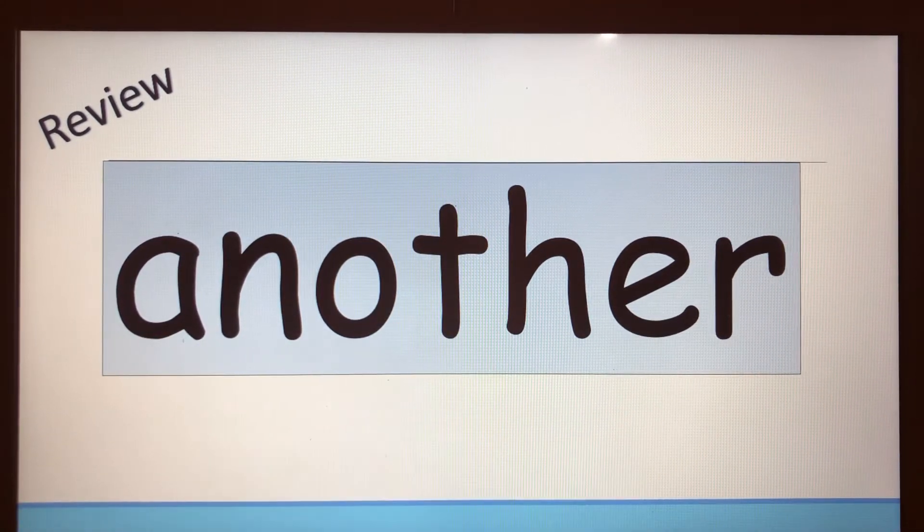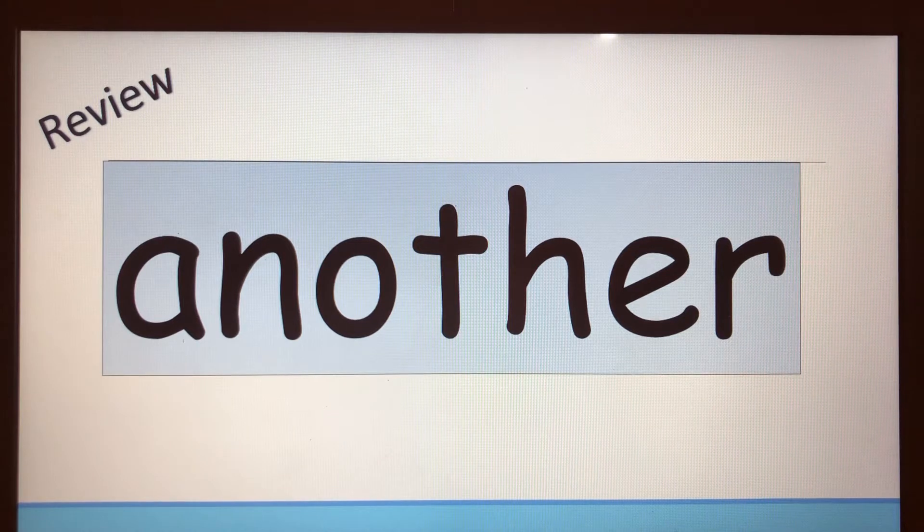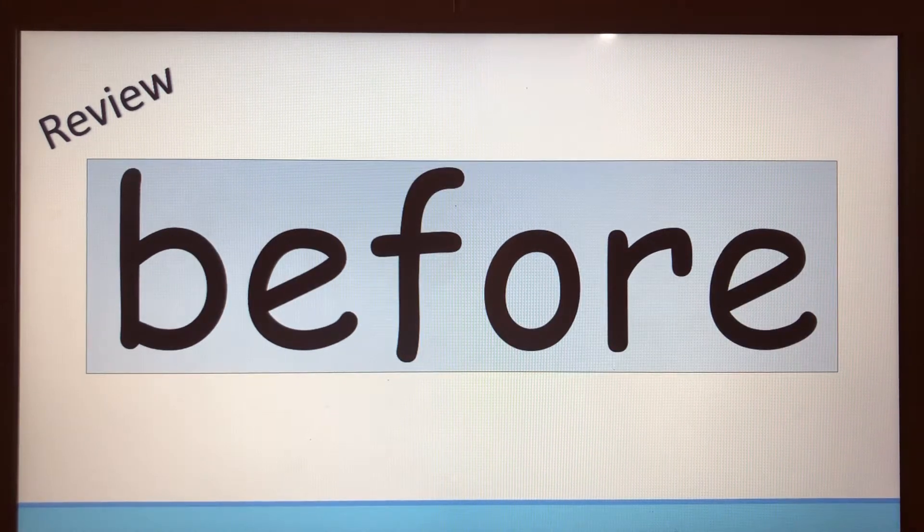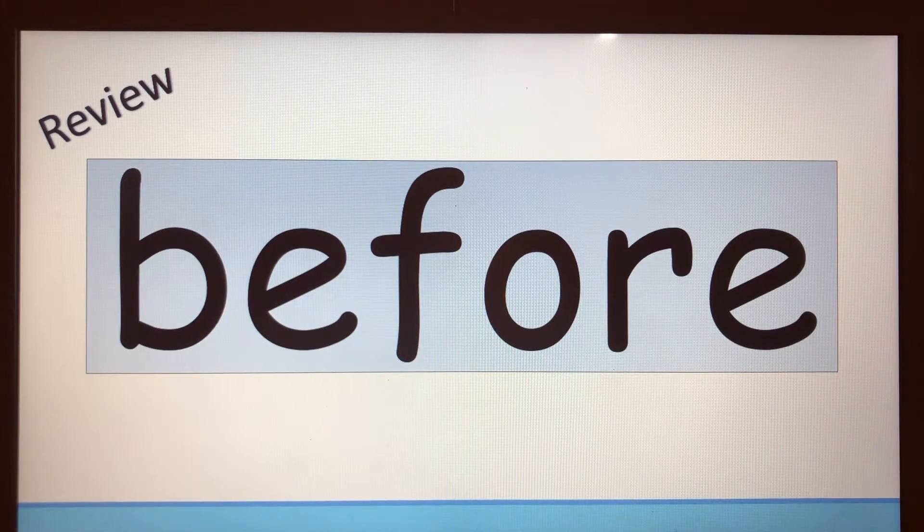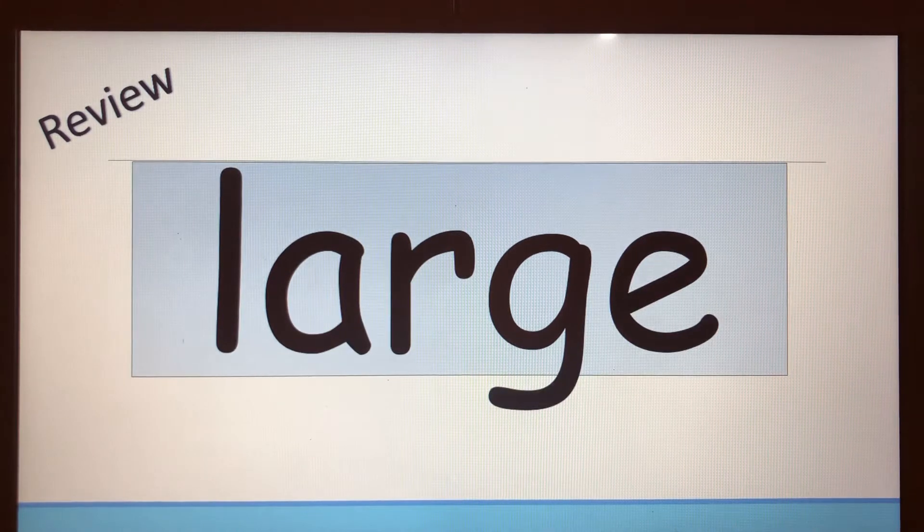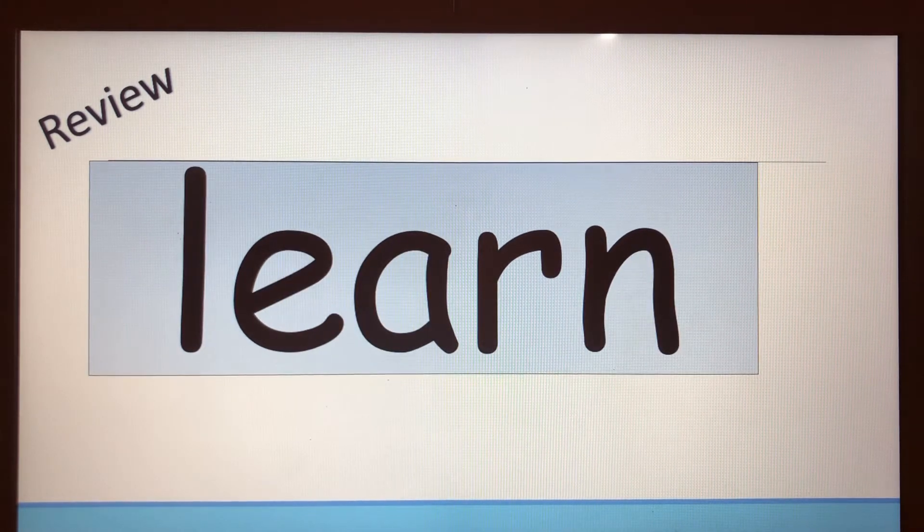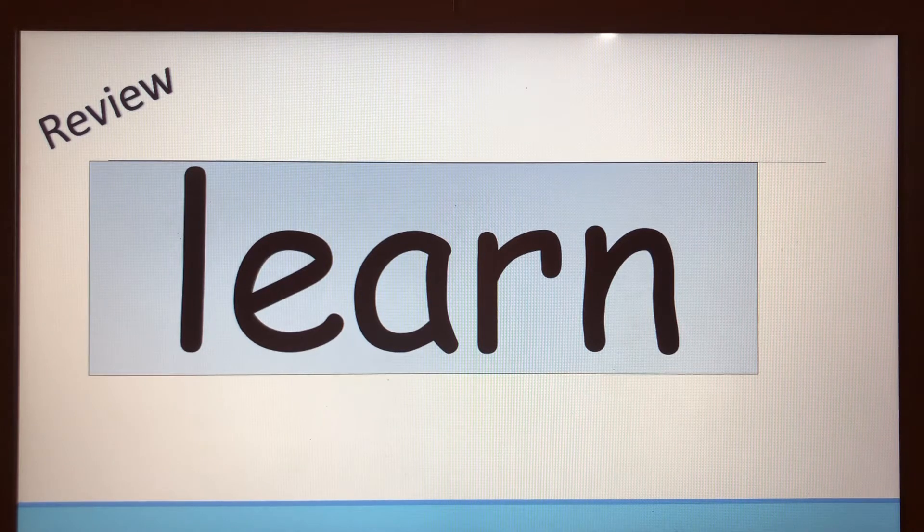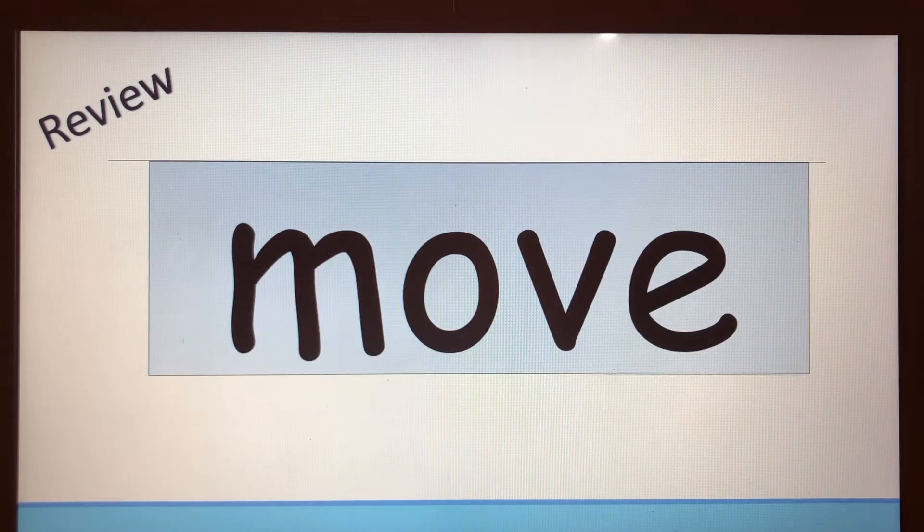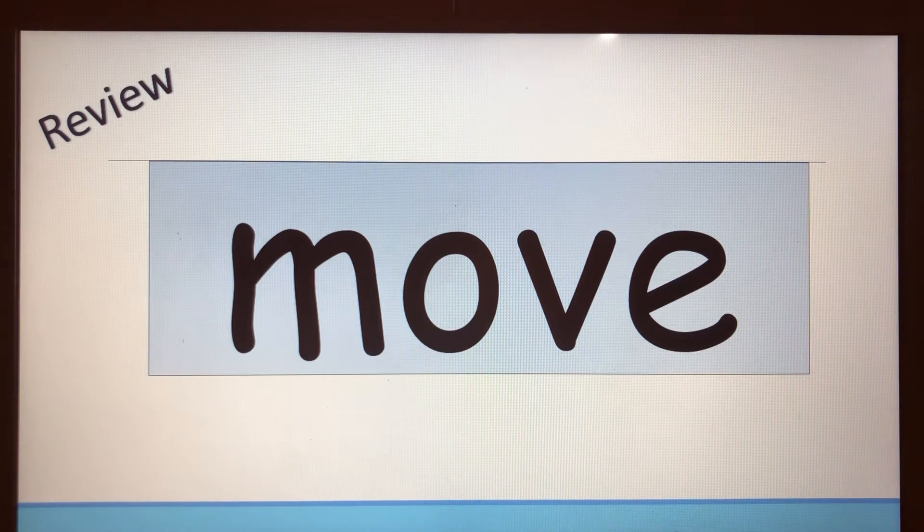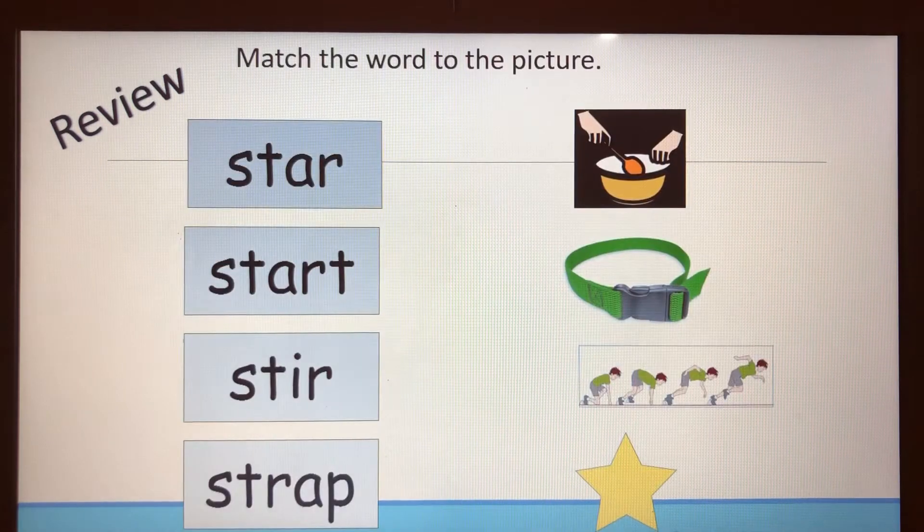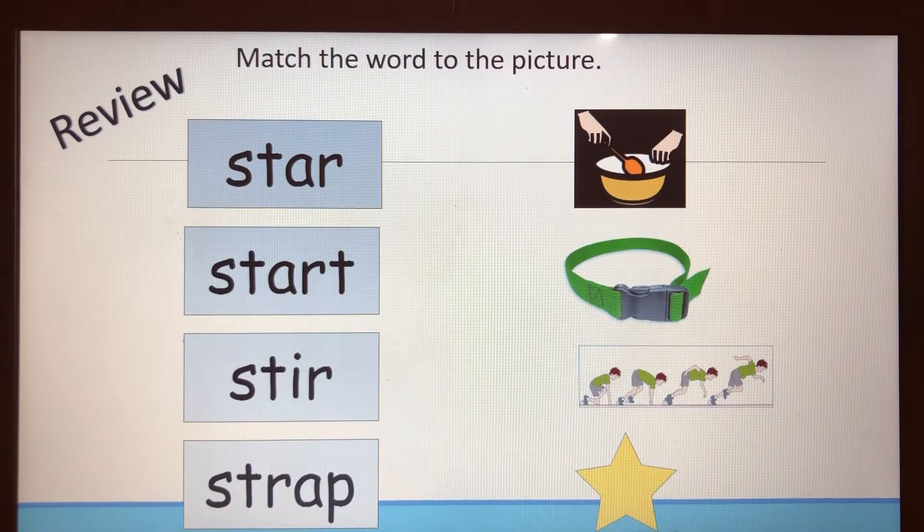Let's begin by reviewing our high-frequency sight words that we've just learned. This is the word another, read this word: before, large, learn, move. And now we're going to play a review matching game where we'll match the words to the pictures.